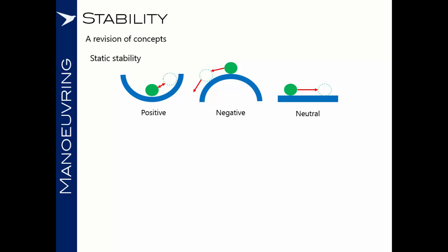Let's talk about stability and revise what we mean by it. When we say that something is statically stable, we mean that if it's disturbed from its current position, it will tend to return to the original position it held before the disturbance. The first diagram shows positive static stability — if the ball is disturbed from the bottom of the cup, it will instantly try to go back to its original position.